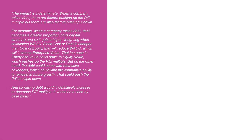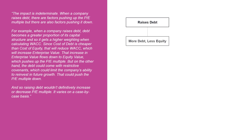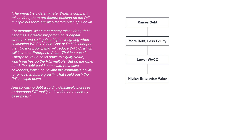When a company raises debt, there are factors pushing up the PE multiple, but there are also factors pushing it down. For example, when a company raises debt, debt becomes a greater proportion of its capital structure, and so it gets a higher weighting when calculating WACC. Since cost of debt is cheaper than cost of equity, that will reduce WACC, which will increase enterprise value. That increase in enterprise value flows down to equity value, which pushes up the PE multiple.